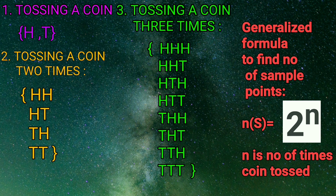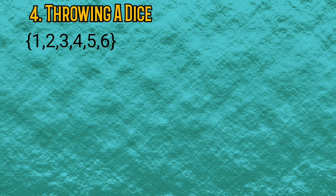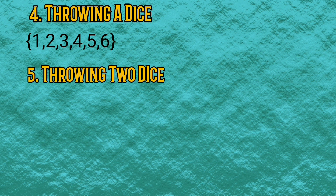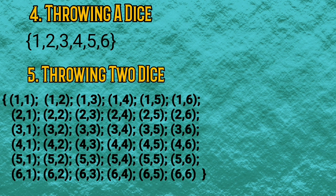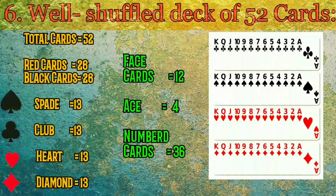Number four: throwing a die once — the results are 1, 2, 3, 4, 5, and 6. Number five: throwing a die two times or two dice simultaneously — the results range from (1,1), (1,2), (1,3), (1,4) up to (6,6). There is also a generalized formula for dice: n(S) = 6^n, where n is the number of times the die is thrown.